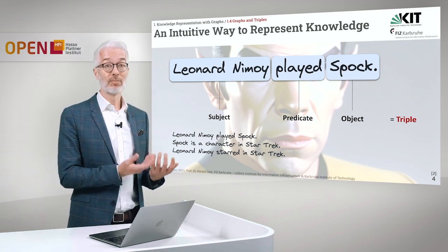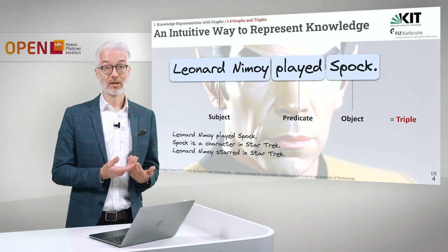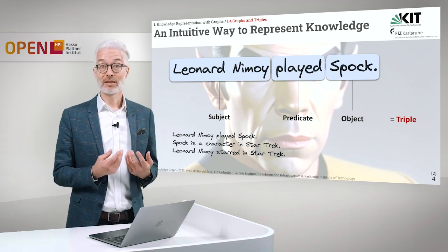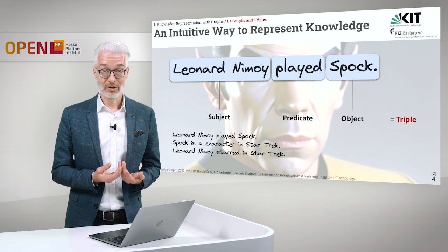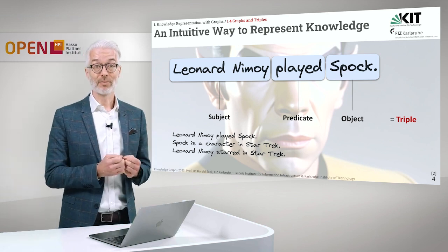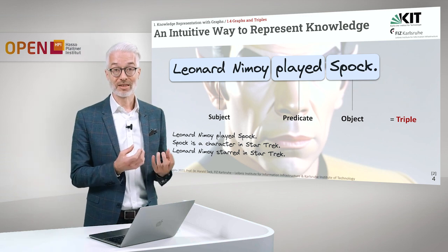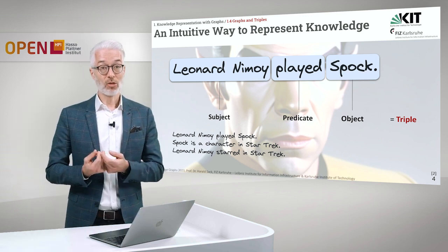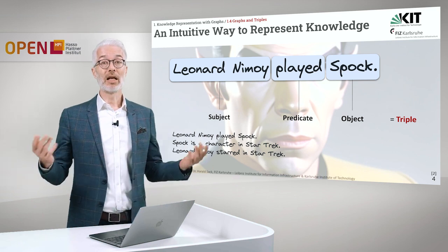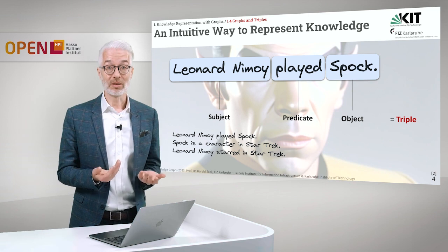You say Leonard Nimoy, which is the subject, played, that's the predicate, Spock, that's the object. This is the very simplest form of a sentence, and it's called a triple. So that's the basic of knowledge representation — you have these kinds of triples. You have two things, the subject and the object, and they are related to each other by a predicate, and this forms a triple.